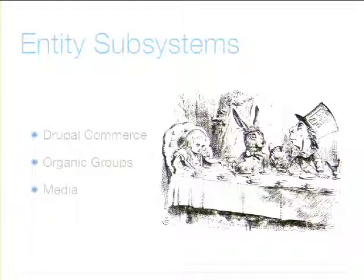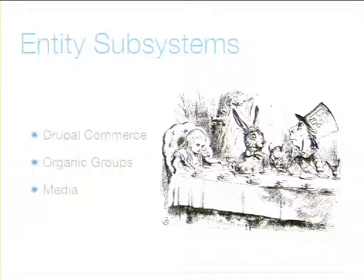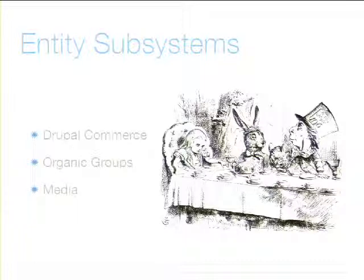There are modules that have built whole subsystems around entities. Drupal Commerce — if you know what UberCart was in Drupal 6 — is a complete ground-up rewrite of doing commerce using the whole entity and field system. Organic Groups existed in Drupal 6, where you'd designate a node as a group and add other nodes as content. In Drupal 7, it's a complete rewrite where any entity can be the group and any entity can be added to the group. Media is a complete ground-up reworking of file handling using the entity system.